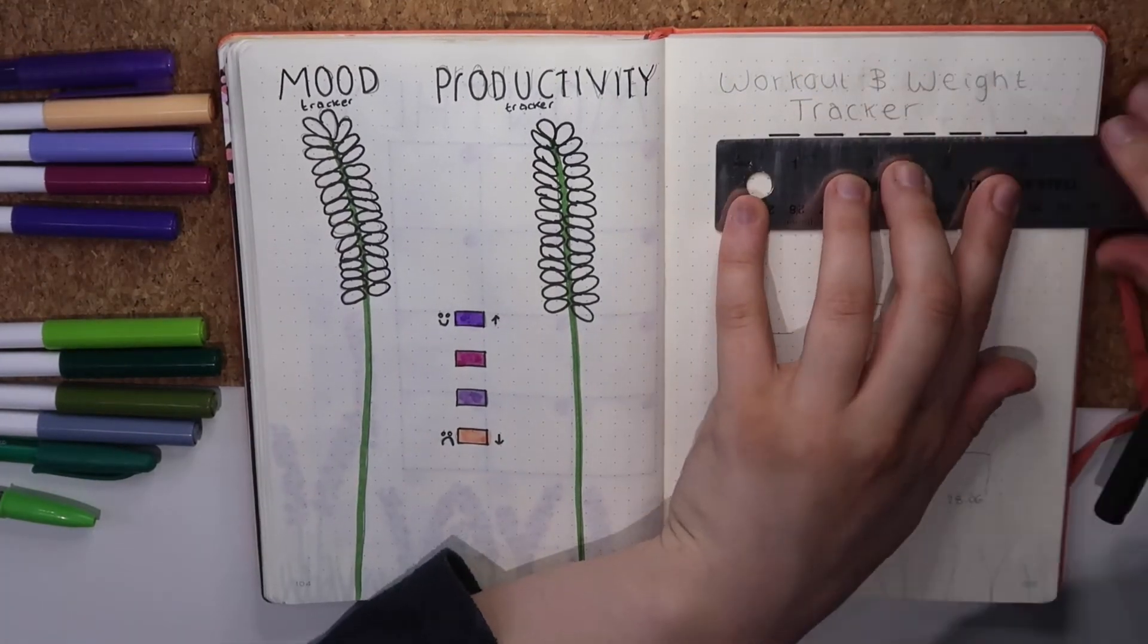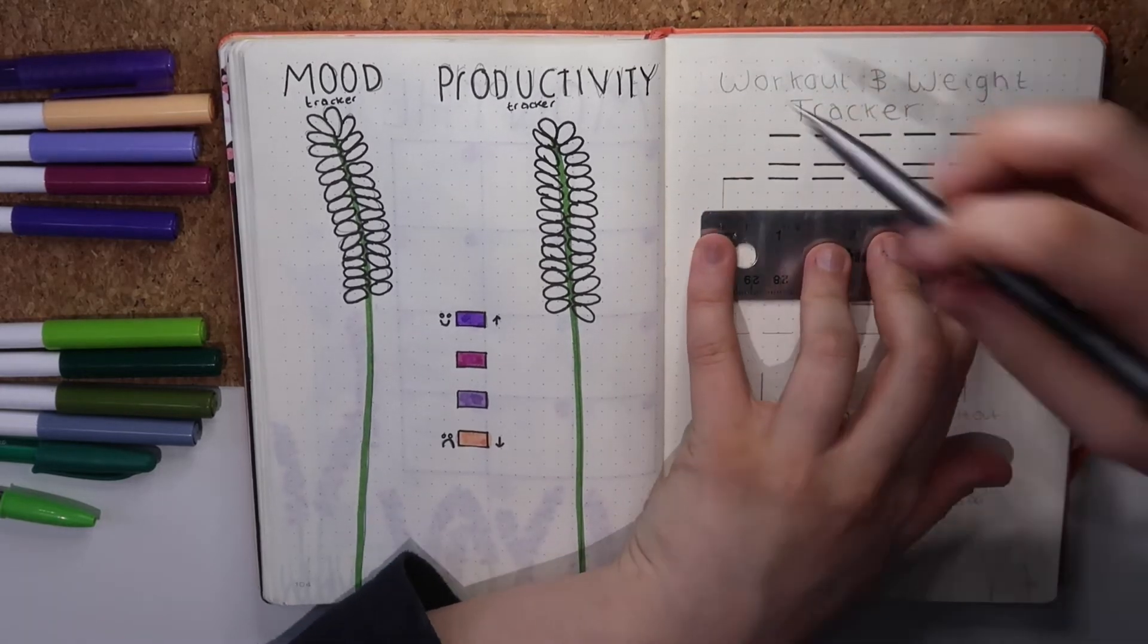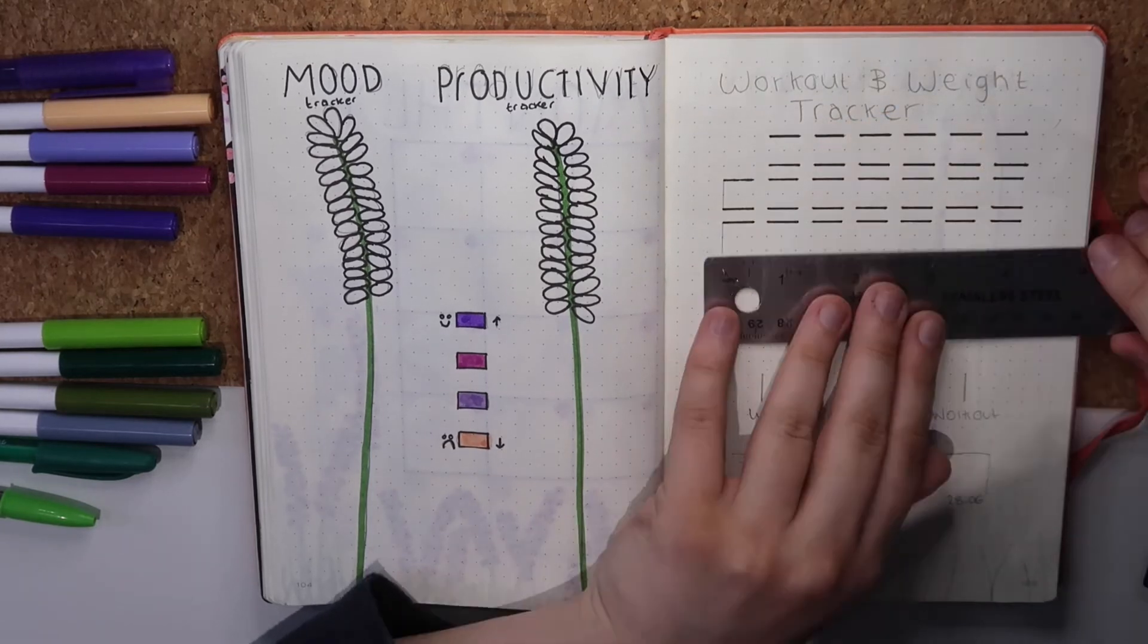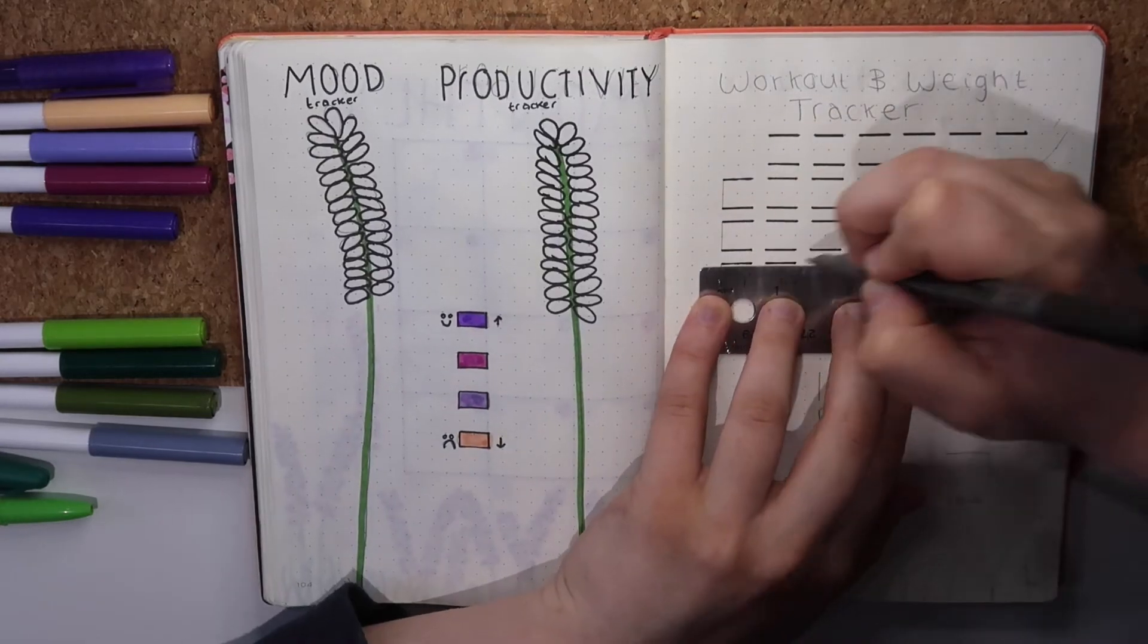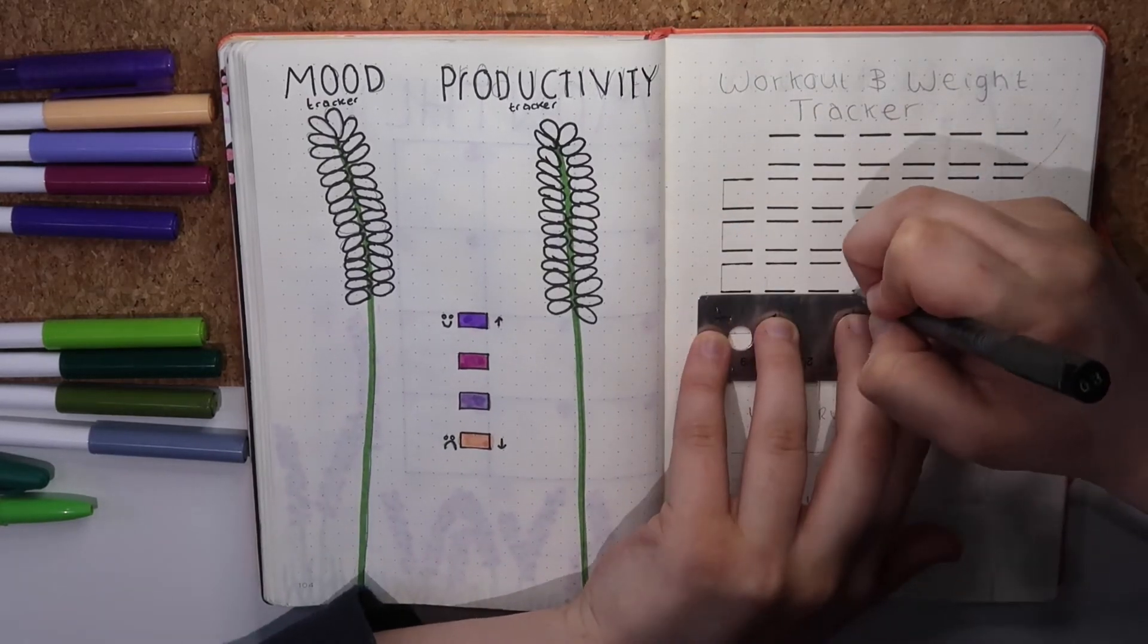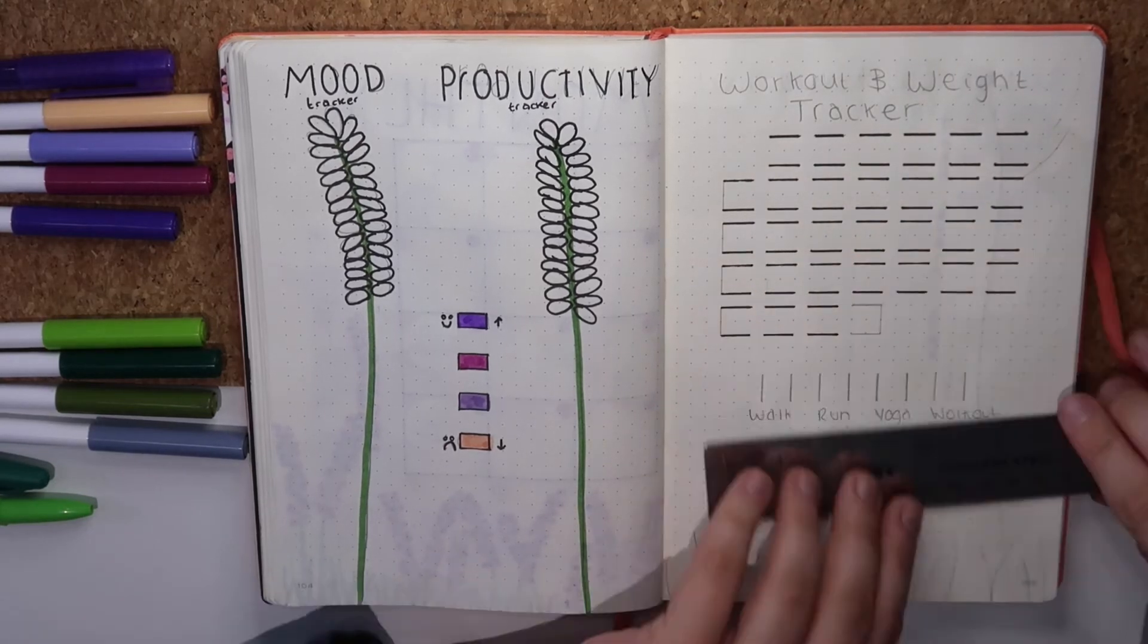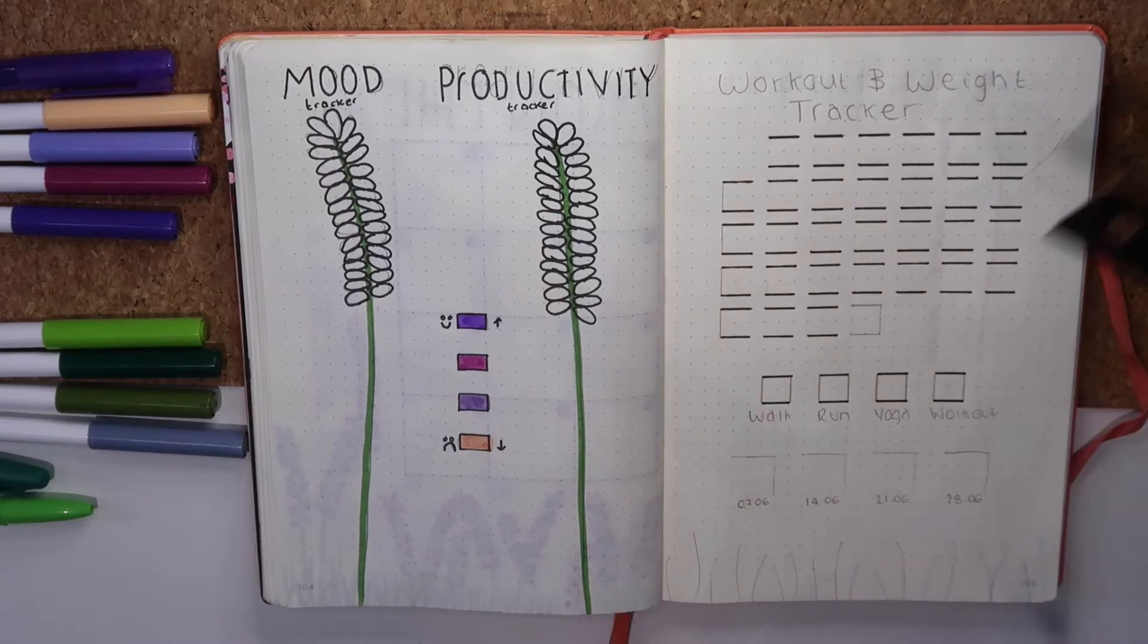Now over onto the workout and weight tracker. What I'm actually tracking here is every day in the month what I've done. So if that's been have I gone for a walk, have I gone for a run, have I done some yoga, have I done an actual workout. And all I do is color code it so each day I can color in what I've done and kind of just see how active I've been.